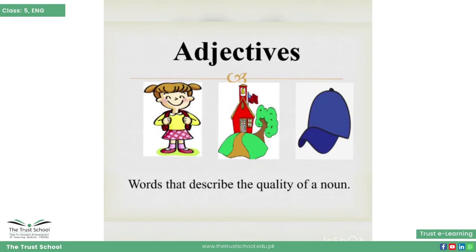Adjectives are the words that describe the quality of a noun. Adjective ka istamal karte hue hum kisi shaks, jaga ya cheez ki quality ke baare mein bata sakti hain. Ye sab cheezein noun ke laati hain, so hum yeh keh sakti hain ke adjective tells the quality of a noun.